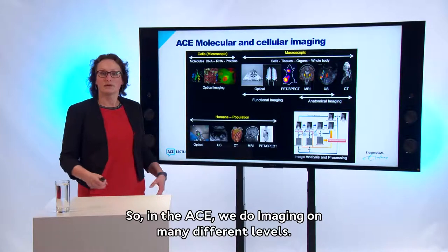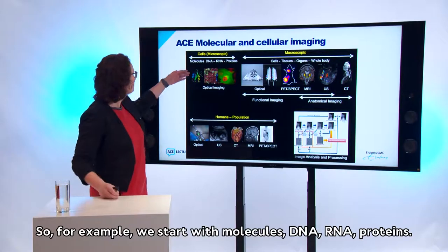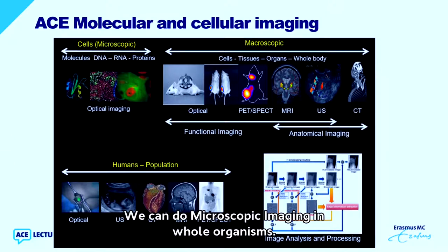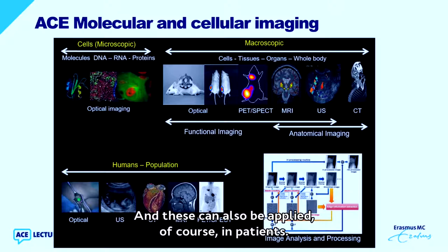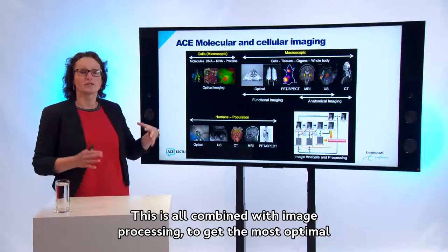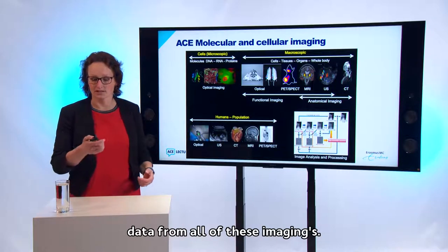In the ACE, we do imaging on many different levels. We start with molecules — DNA, RNA, proteins — with optical imaging and microscopes. We can do microscopic imaging in whole organisms, going from optical to anatomical imaging with PET, MRI, ultrasound, and CT. These can also be applied in patients for human and population imaging, for image-guided surgery, MRI, PET, and SPECT. This is all combined with image processing to get the most optimal data from all of these imaging modalities.